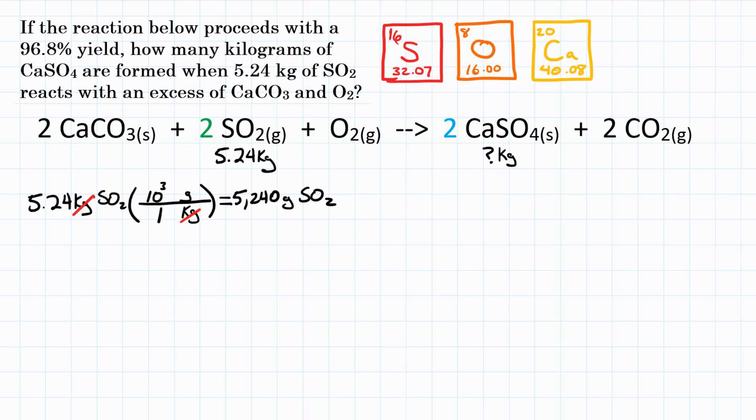So let's take that 5,240 grams, and we want to do some stoichiometry and figure out how much CaSO4 we're going to produce. So we're going to take our grams of SO2, multiply by 3 conversion factors, or a 3-step stoichiometry problem, because we're going mass to mass, and end up with grams of CaSO4. So first step, we're going to take grams of SO2, and convert to moles of SO2.